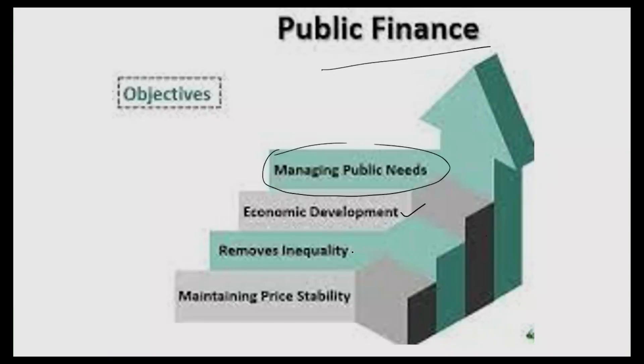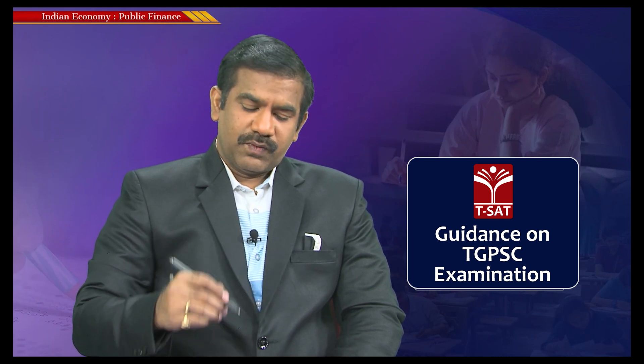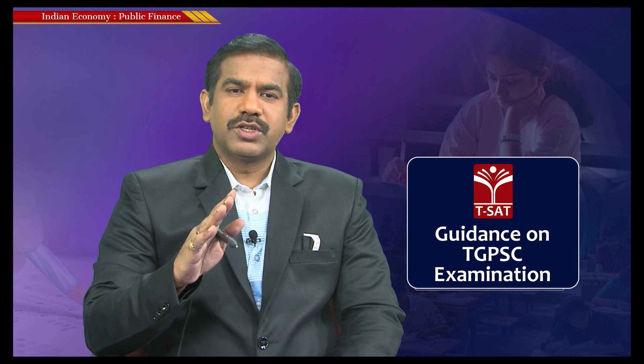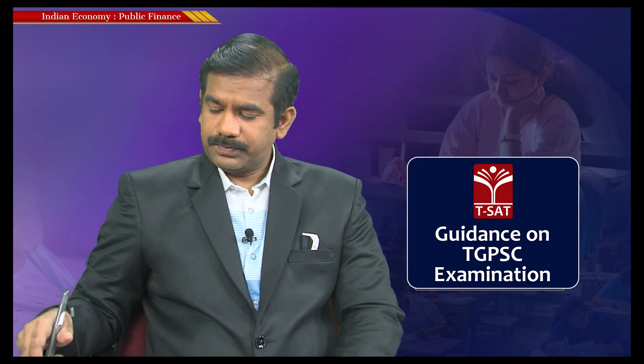The second objective is to promote economic development — to boost growth and employment and ensure the fruits of growth are fairly distributed. The third is to reduce inequalities by helping those in need and creating a level playing platform within society. The fourth objective is to maintain price stability. These four objectives broadly define the purpose of fiscal policy.